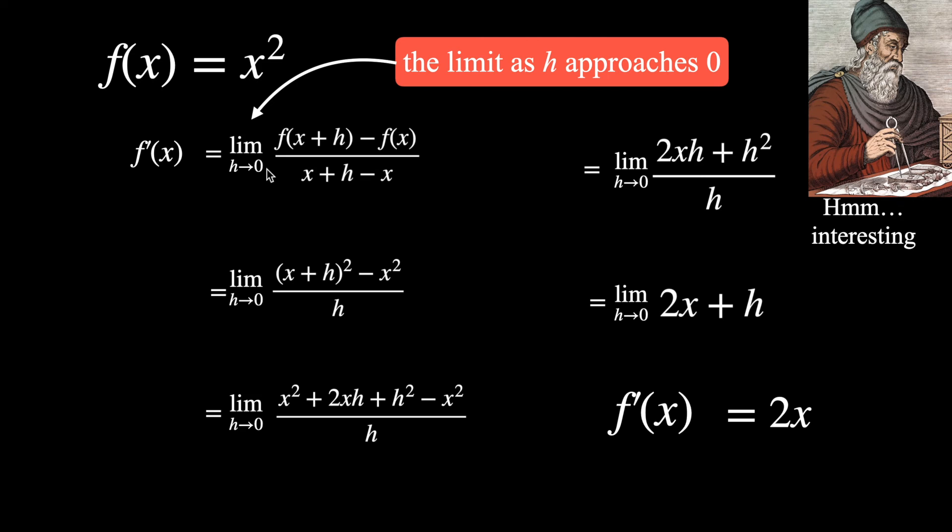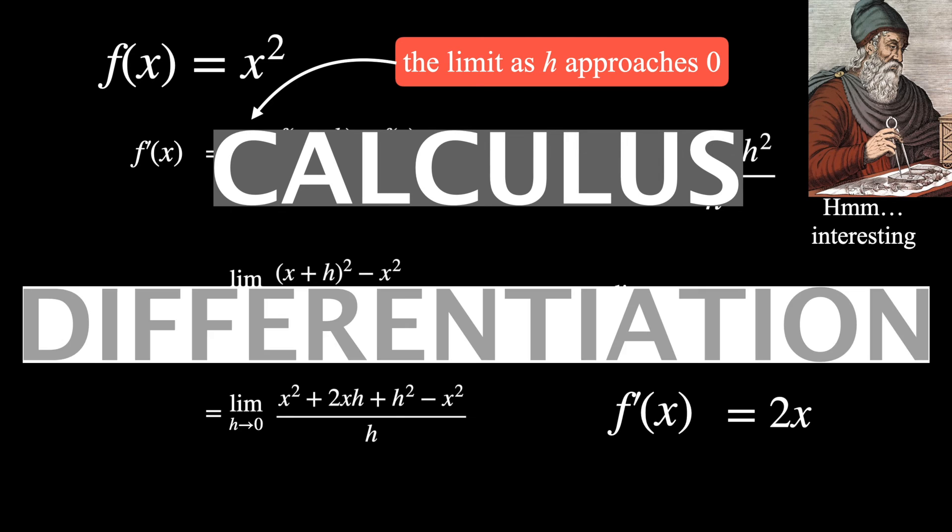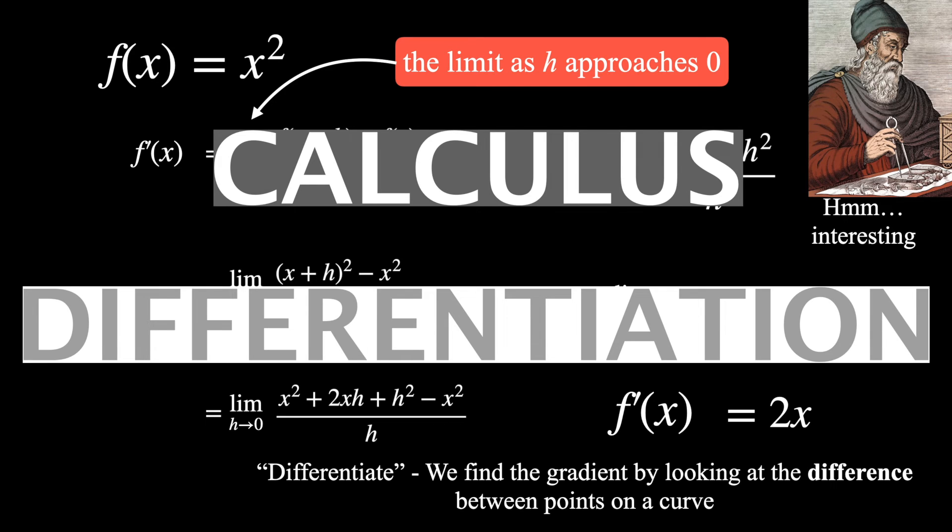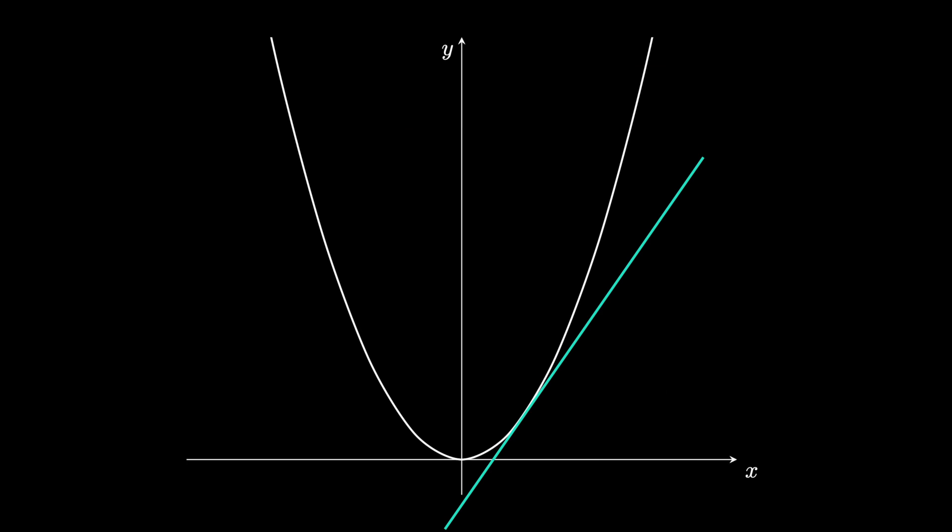So what we're doing falls under the topic of calculus, and looking for the gradient of the tangent is something called differentiation. So differentiation comes from the word to differentiate. Think about how we find the gradient by looking at the difference between points on a curve. So that comes from difference, differentiate, differentiation. And this function, f dash x is also called the derivative. Why do we care about finding the gradient of a curve?